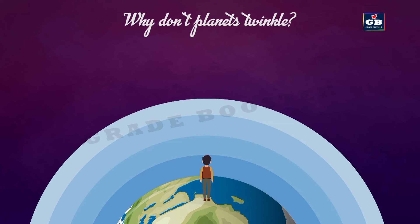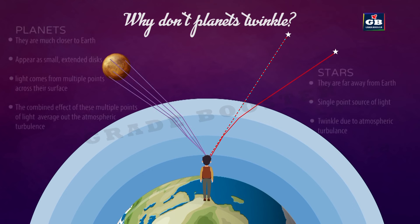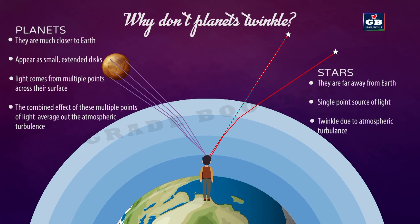Why don't planets twinkle? Planets do not twinkle because they are much closer to Earth and appear as small extended disks rather than point sources of light. Multiple points of light come from the planets since they are bigger and closer to Earth. The combined effect of all these multiple points of light averages out the atmospheric turbulence, canceling it out, resulting in a steadier and less twinkling appearance.